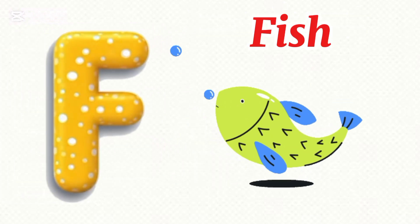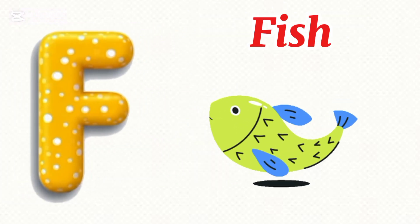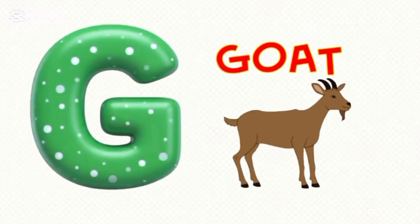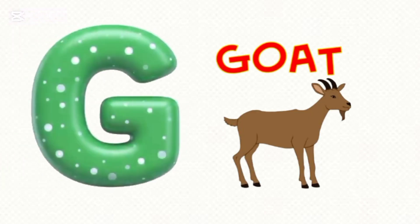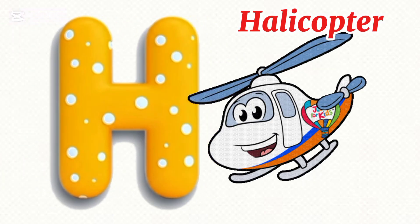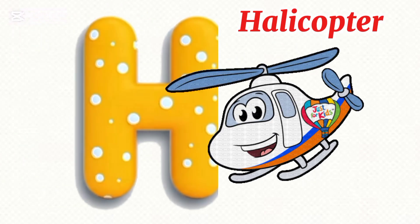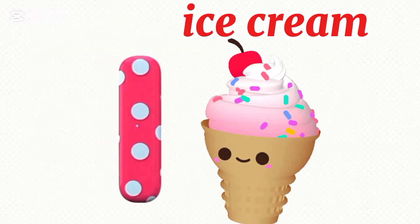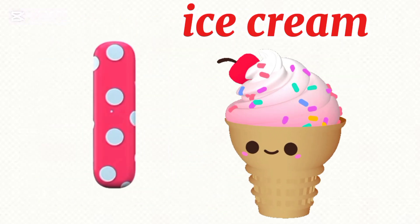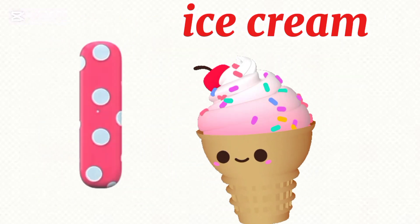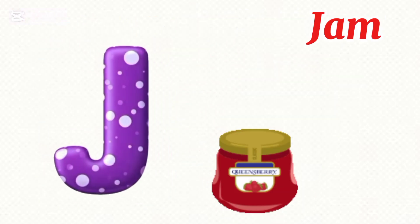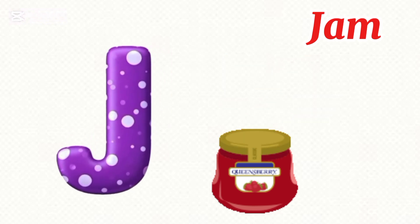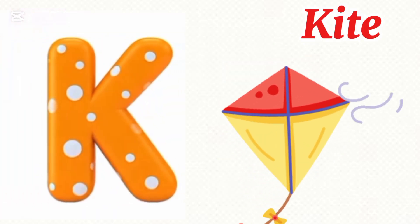F is for fish, fish, fish. G is for goat, goat, goat. H is for hat, helicopter. I is for ice cream, I-I-ice cream. J is for jack.